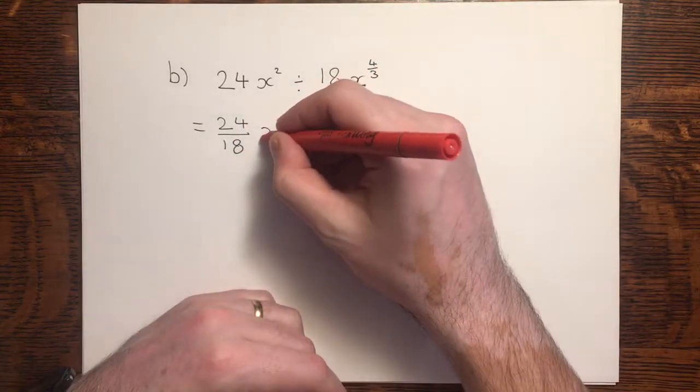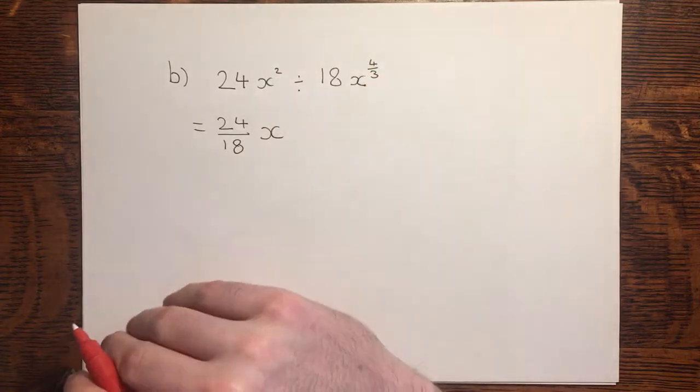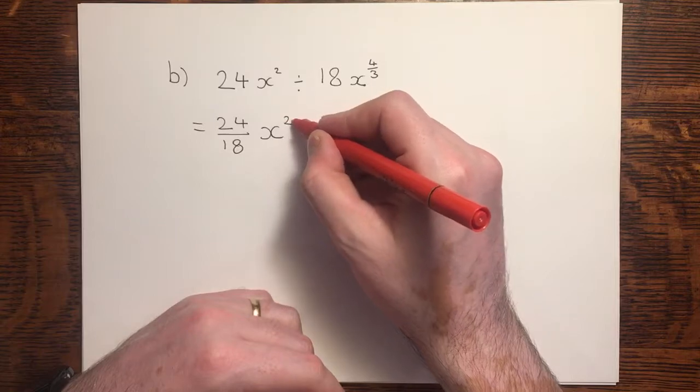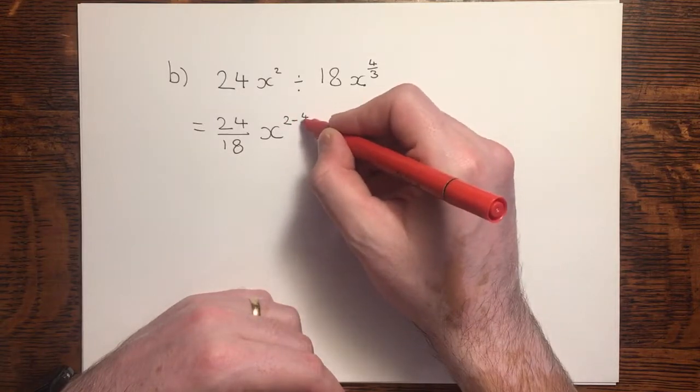The next thing to do is to deal with the indices on x. With indices, to divide, you must subtract, so 2 minus 4 thirds.